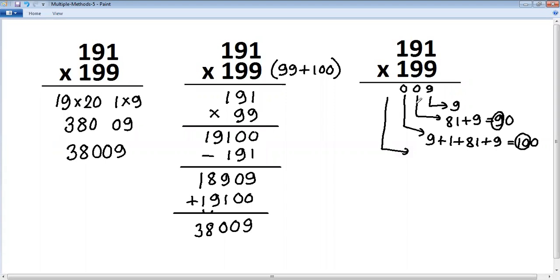Next step, 1 into 9 is 9, plus 9 into 1 is 9, equals 18, plus carry 10 equals 28. So out of that will take 8, carry 2. The last step, 1 into 1 is 1 plus that carry 2, 1 plus 2 is 3. So 38009, the same answer.